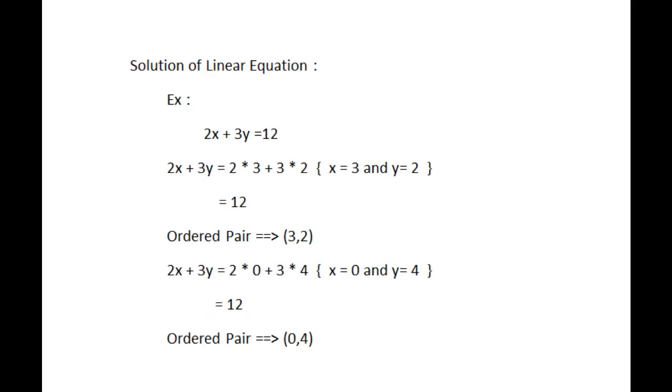Next, solution of linear equation. Let's consider the equation 2x plus 3y equal to 12. Here, x equal to 3 and y equal to 2 is a solution. Because we substitute x equal to 3 and y equal to 2, then we get 2 into 3 plus 3 into 2 equal to 12. The solution is written as an ordered pair 3 comma 2.